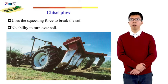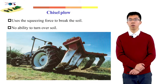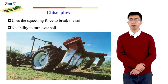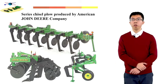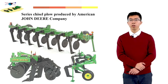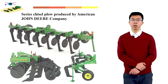The third one is the chisel plow, also known as the deep-loosen plow. The working part is the chisel-tooth-shaped subsoil loosening tool, which is installed on the rear beam of the frame. The chisel-tooth-shaped tools use squeezing force to break the soil, and loosen the lower layer without turning it over. This picture shows a chisel plow produced by the American company John Deere, a famous and one of the largest agriculture equipment companies in the world. The color of John Deere equipment is normally green.